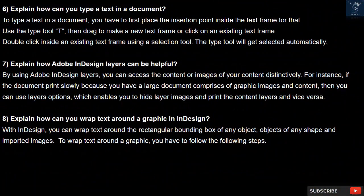Question 6. Explain how can you type text in a document. To type text in a document, you have to first place the insertion point inside the text frame. Use the Type tool (T), then drag to make a new text frame or click on an existing text frame. You can also double-click inside an existing text frame using a selection tool — the Type tool will get selected automatically.